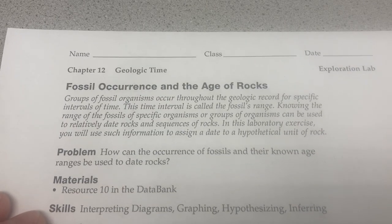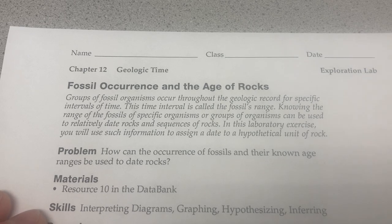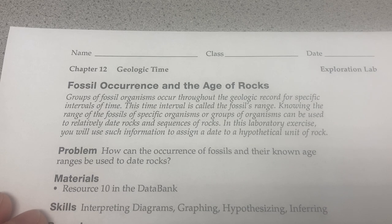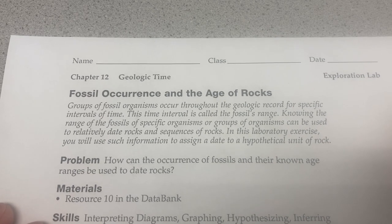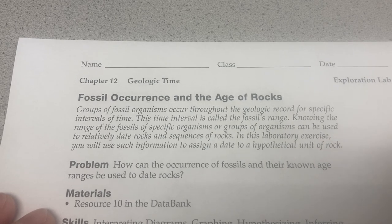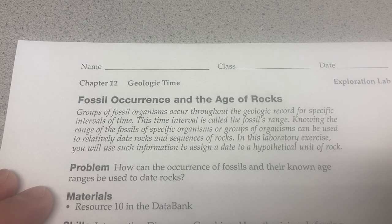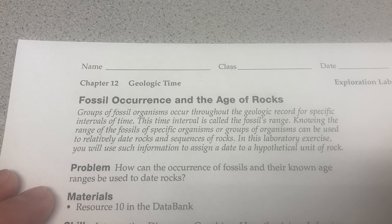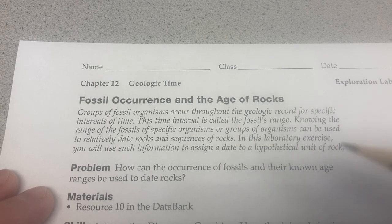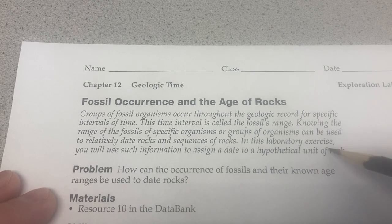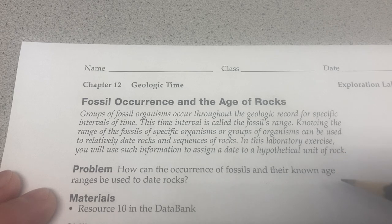Today we're going to talk about fossil succession and how the occurrence of fossils in different regions of the rock record helps us to age the actual rocks. Groups of fossil organisms occur throughout the geological record for specific intervals of time. This time interval is called the fossil's range. Knowing the range of specific organisms can be used to relatively date rocks and sequences of rocks. In this exercise we're going to use such information to assign a date to a hypothetical unit of rock.